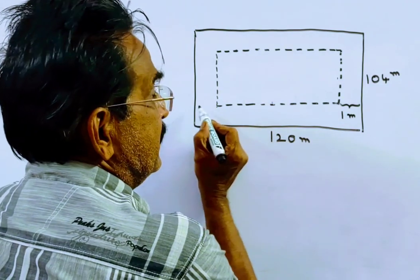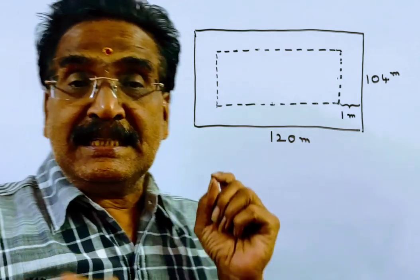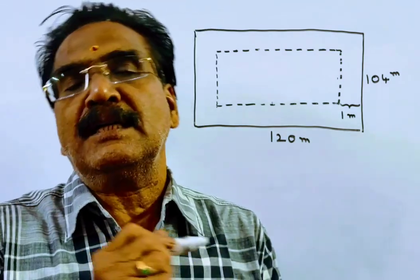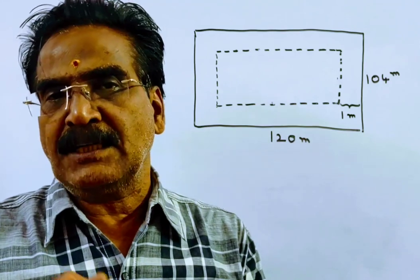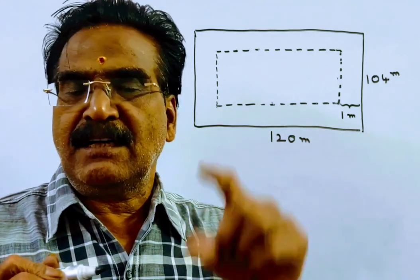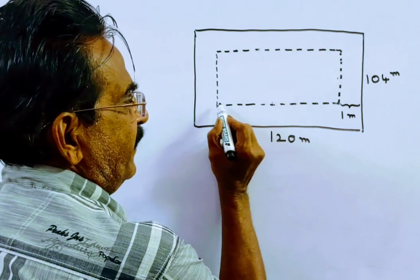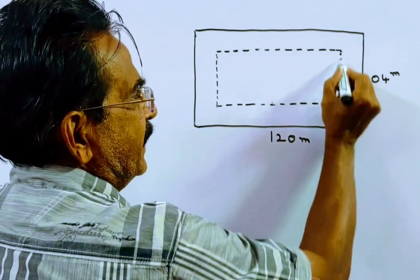So friends, now the inside edges are marked with a white line at a cost of Rs. 55 per meter. Friends, let us find the perimeter of the inner rectangle.